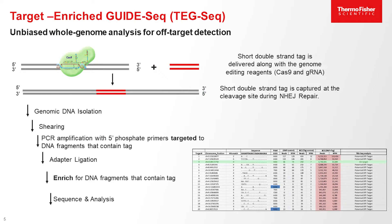TegSeq is target-enriched guide sequencing. It's an unbiased whole genome analysis for off-target events. What we do is transduce a separate cell — the same cell line — in parallel with CRISPR-Cas9 and introduce a short double-stranded tag. Whenever there's a Cas9 cut in the genome, it introduces this short tag via NHEJ repair. After that, we take the cells, collect the genomic material, perform shearing, PCR amplification for that tag, enrich for DNA fragments containing the tag, and do sequence analysis.